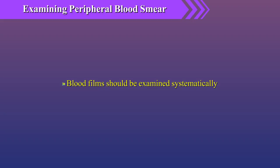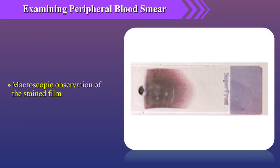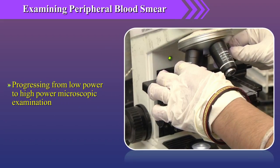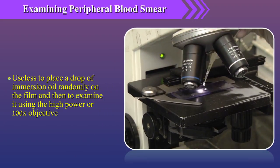Blood films should be examined systematically, starting with macroscopic observation of the stained film and then progressing from low power to high power microscopic examination, since it is useless to place a drop of immersion oil randomly on the field and then examine it using the high power or 100x objective.